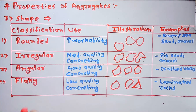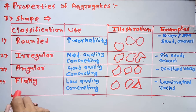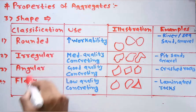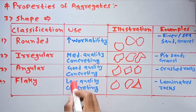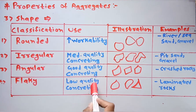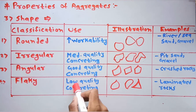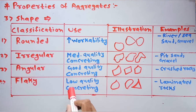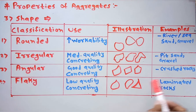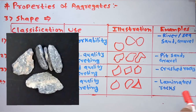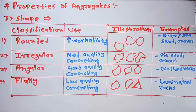Flaky aggregates give low quality concreting and their examples are laminated rocks, that is, cut or chiseled rocks. This covers the basic things we consider when studying the property of aggregates according to shape.